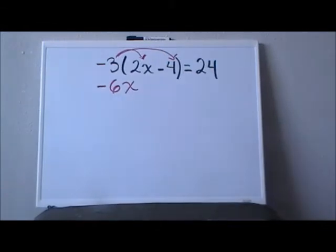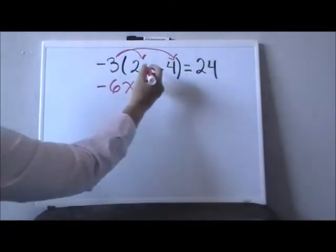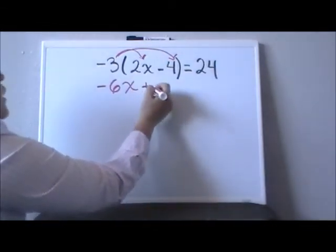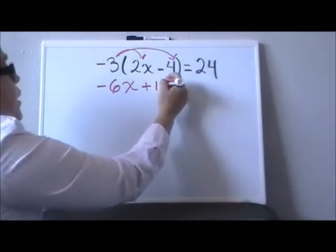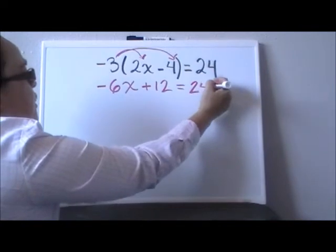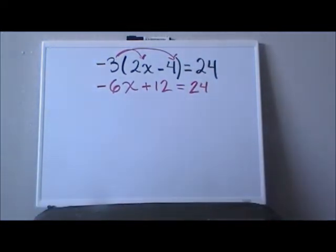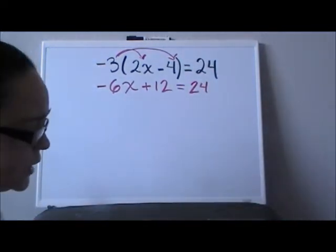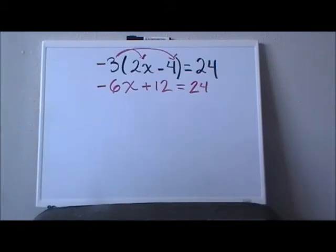Again, we start with signs first. Negative and negative gives me a positive. Three times four gives me a twelve, and that will be equal to twenty-four. We just took care of the parentheses by using Distributive Property.